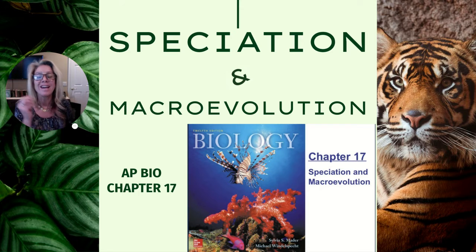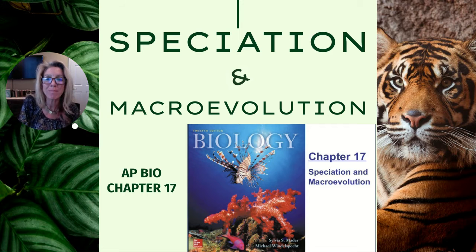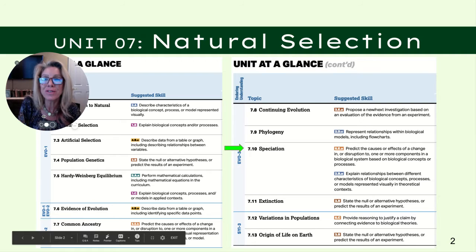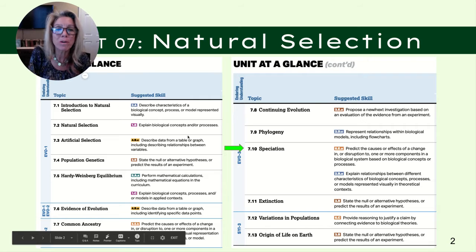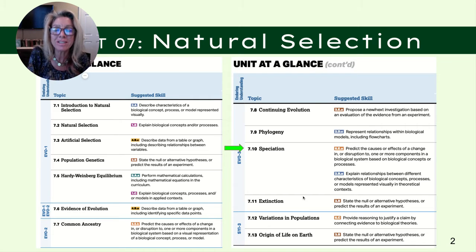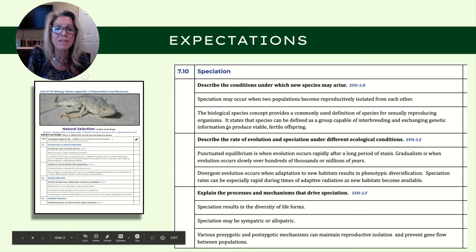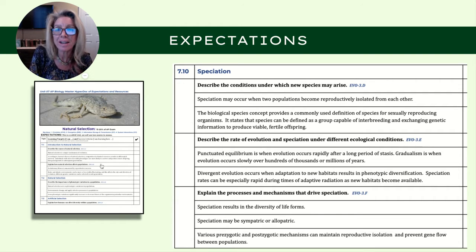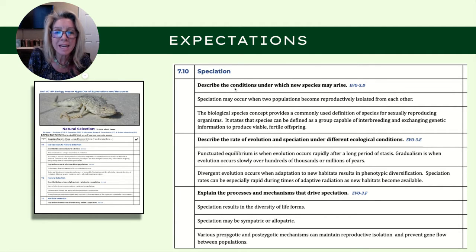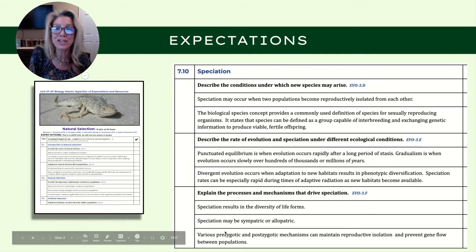Column two, I encourage you to put in pictures. This is chapter 17. I want to remind you that you always want to go back to the College Board and look at the topics and the expectations. This topic is in unit 7, 7.10 speciation, and I have a hyperdoc unit guide made for my students with helpful reviews.